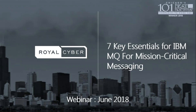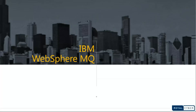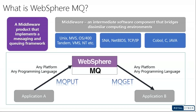Hi everyone, my name is Trini Vass and I'm working as a practice manager for middleware technologies at Royal Cyber. As per the agenda, we are giving a brief introduction about WebSphere MQ. WebSphere MQ is the IBM flagship product — it stands for IBM WebSphere Message Queuing.